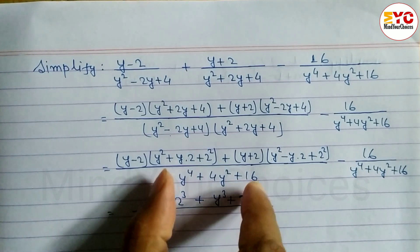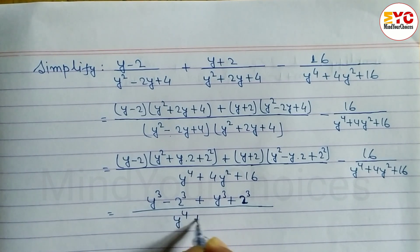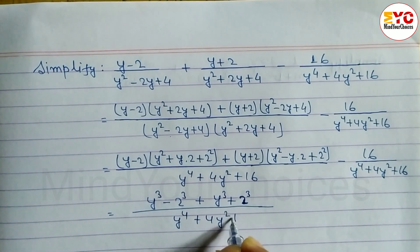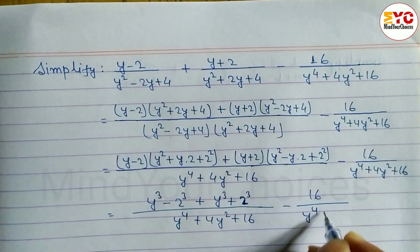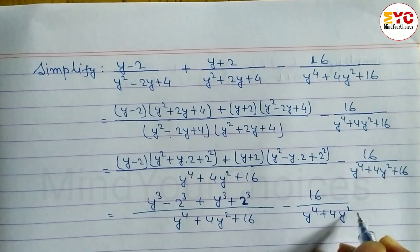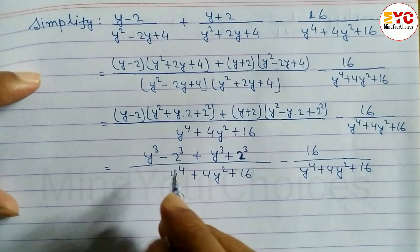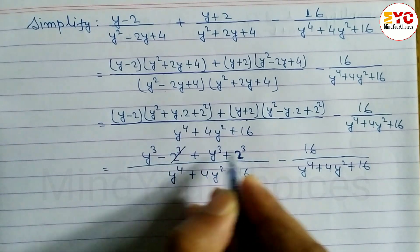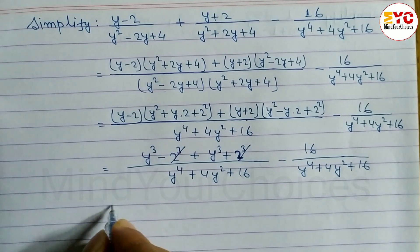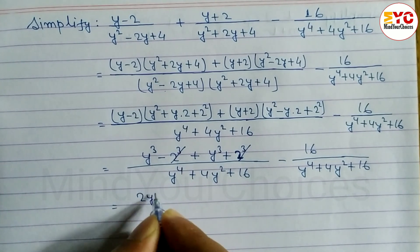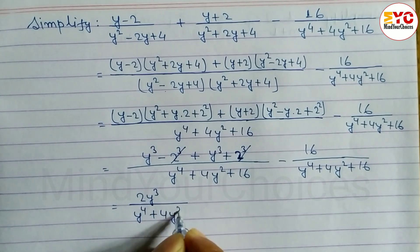So we can write here 2 cubed. Now you can see here — 2 to the power 3, 2 to the power 3.